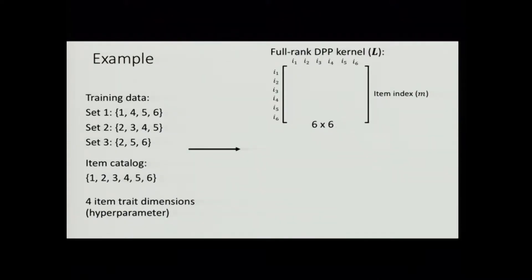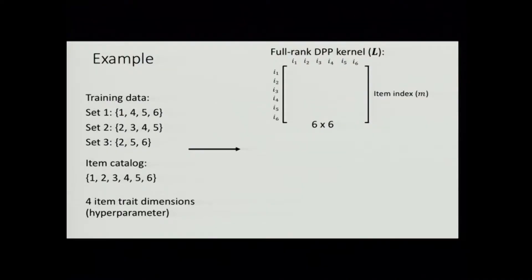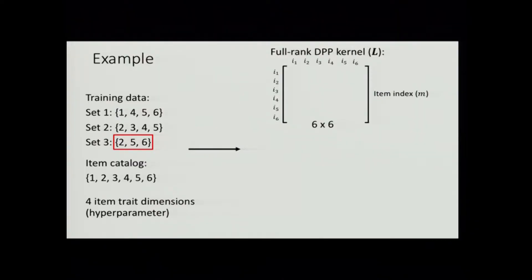Let's look at a toy example to make these ideas more concrete. Imagine we have three training sets — three observed purchase shopping baskets — and an item catalog of six items. We'll look at the full-rank traditional formulation as well as our low-rank formulation, which addresses a number of the issues regarding scalability and inference. The full-rank L is going to be of size M-by-M, so with six items we have a six-by-six L matrix. For set three, the submatrix is simply rows two, five, and six — corresponding to the item indices — and columns two, five, and six from the L matrix.